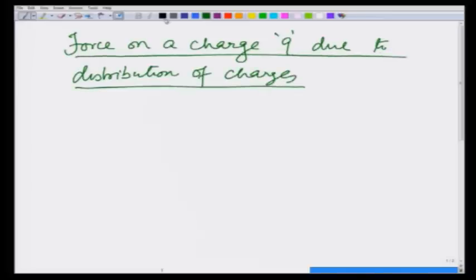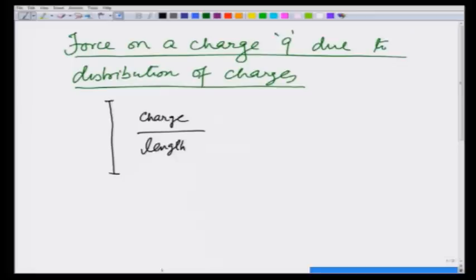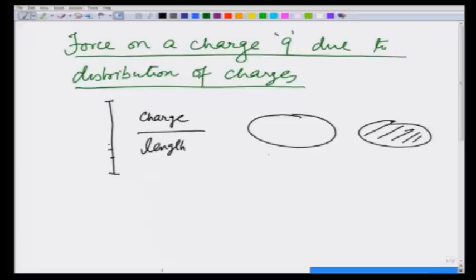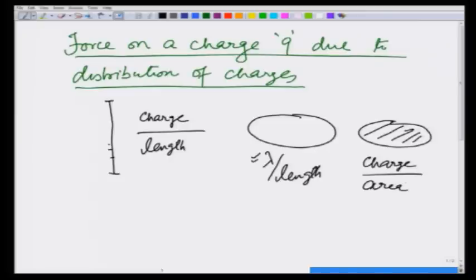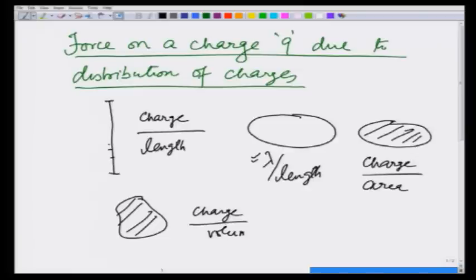By distribution, I mean it could be a charge distributed over a line — this I will say charge per unit length will give me the distribution. That charge could be dependent on position or independent. There could also be charge on a ring or on a disk. Charge per unit length is usually denoted by lambda, charge per unit area is surface charge density, and charge per unit volume is volume charge density.